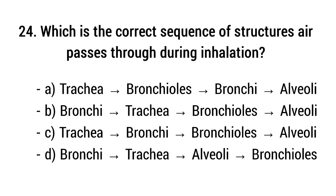Question number twenty-four. Which is the correct sequence of structures air passes through during inhalation? The right answer is option C: Trachea, bronchi, bronchioles, alveoli.